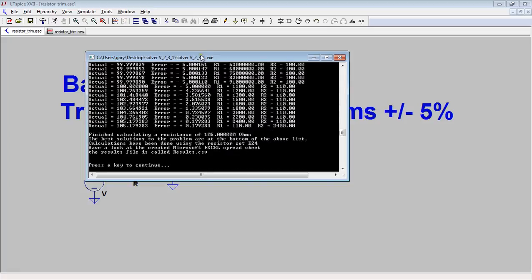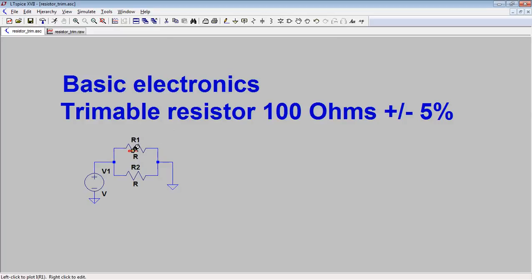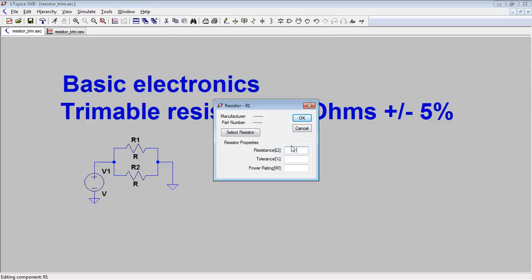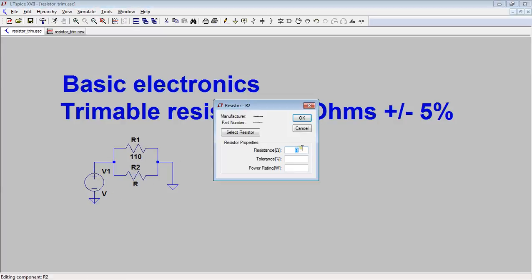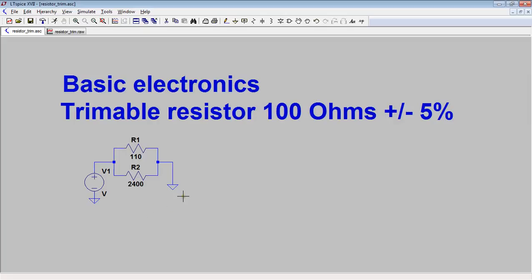Okay, so I need to get 105 ohms. I need a 110 ohm resistor and a 2k4 resistor. So I'll put 110 ohms in there and then 2400 there.